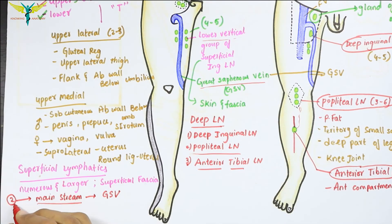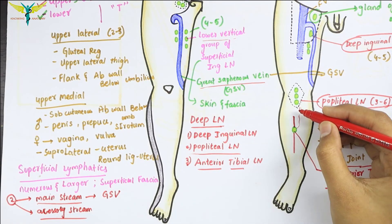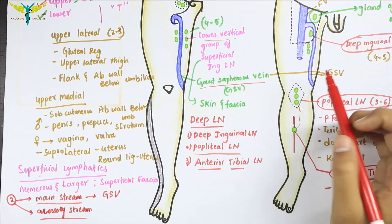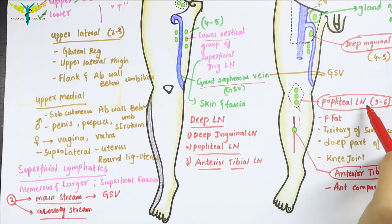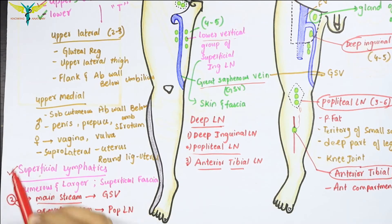The second stream is the accessory stream. These follow the small saphenous vein and drain into the popliteal lymph nodes, which are the deep group of the lymph nodes. So this is about the superficial lymphatics.